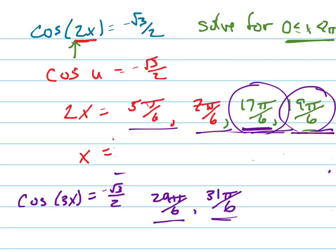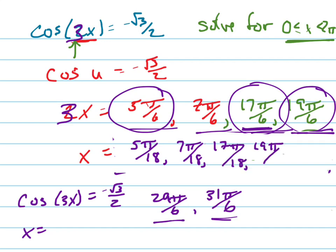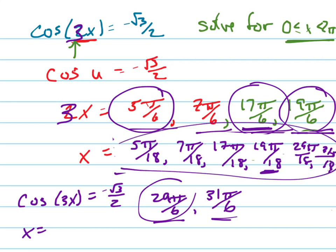So your answers for this would be x equals... Remember, this would be a 3 now. I'm going to divide by 3. So it's 5 pi over 18, 7 pi over 18, 17 pi over 18, 19 pi over 18. Notice I just barely got past the pi, past halfway around the circle. And then 29 pi over 18, and 31 pi over 18. Those are my six answers, because this was a 3x, which meant I had to go around the circle three times to get all of the values that would give me solutions between 0 and 2 pi.